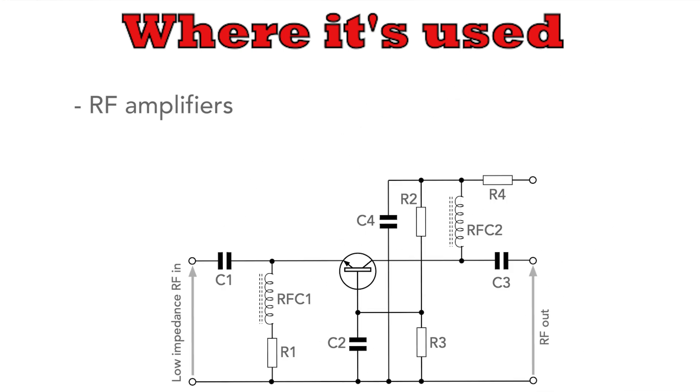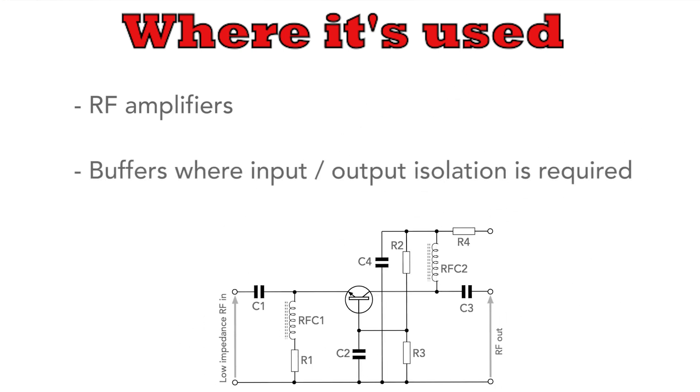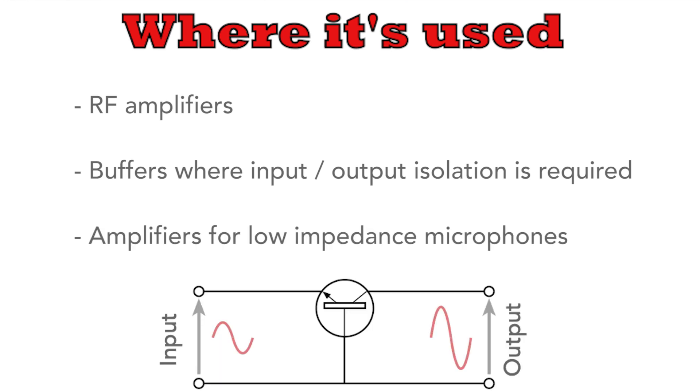In terms of their usage, possibly they are most widely used for RF amplifiers, especially at high frequencies. They can also be used as buffer amplifiers where good isolation is needed between the input and output. They are also used in some microphone preamplifiers, especially where the microphone may have a very low impedance. Ribbon microphones are a particular example.